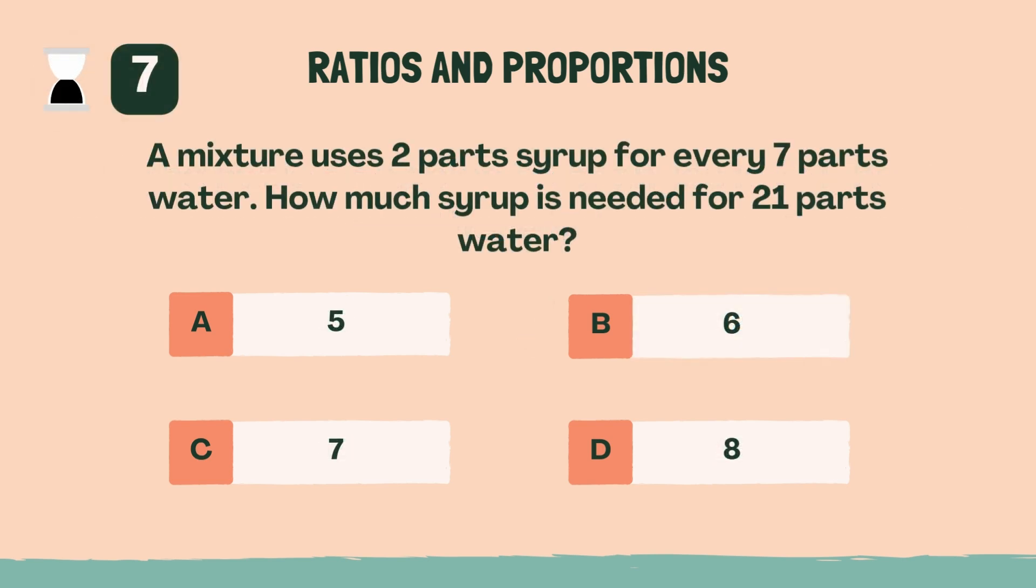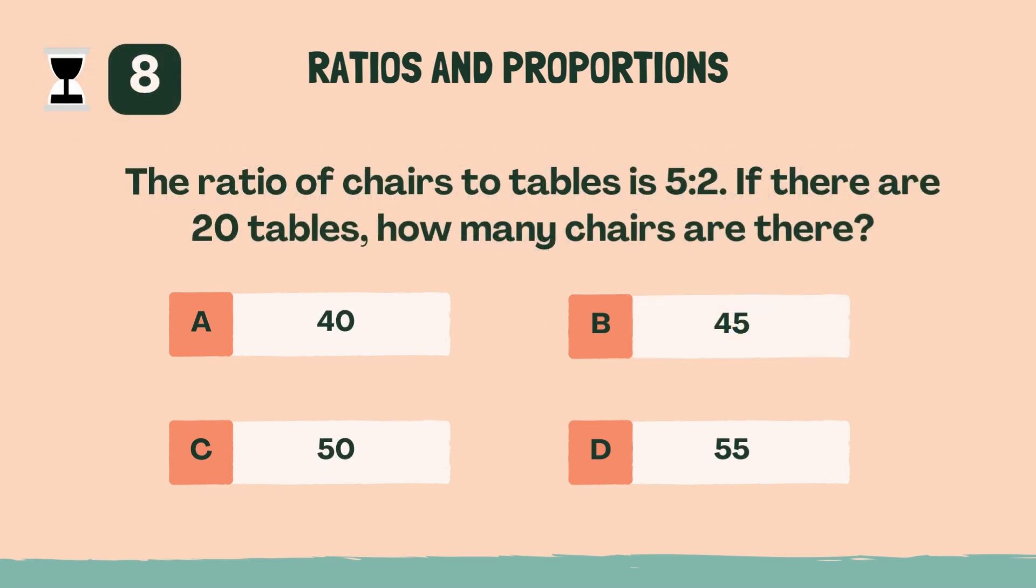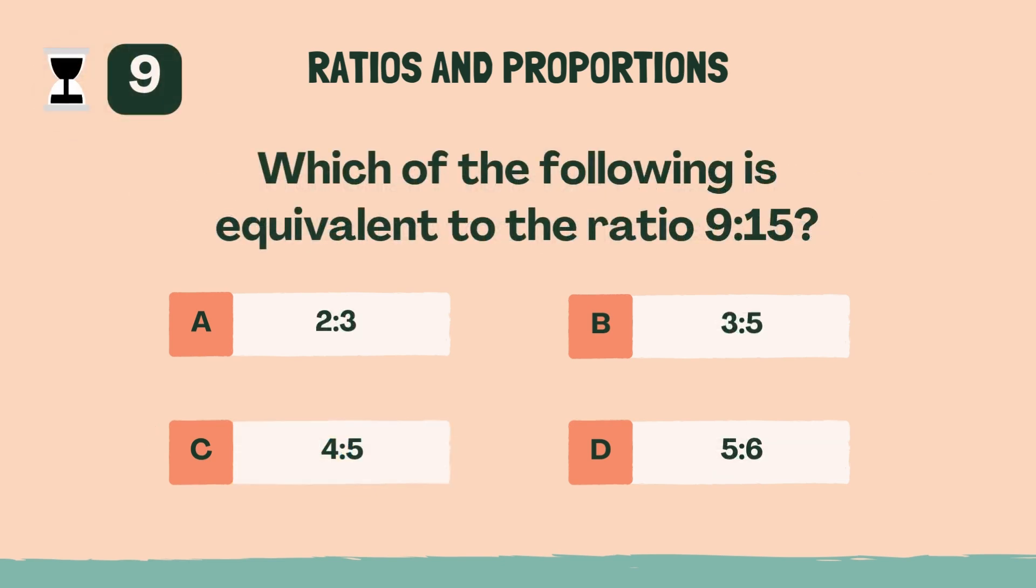A mixture uses two parts syrup for every seven parts water. How much syrup is needed for 21 parts water? B, six. The ratio of chairs to tables is five to two. C, 50. Which of the following is equivalent to the ratio 9 to 15? B, three to five.